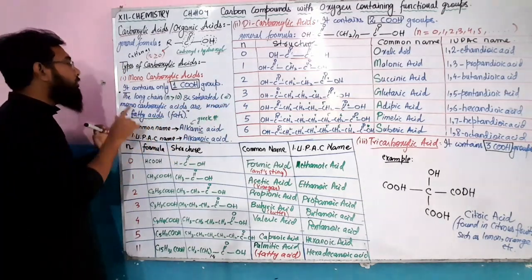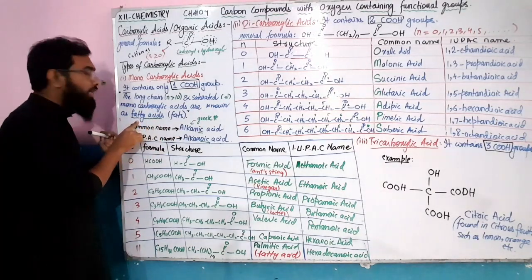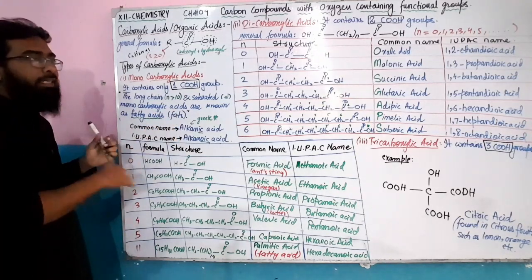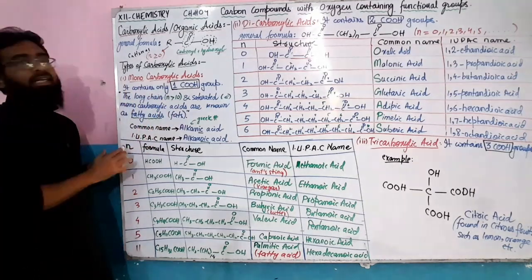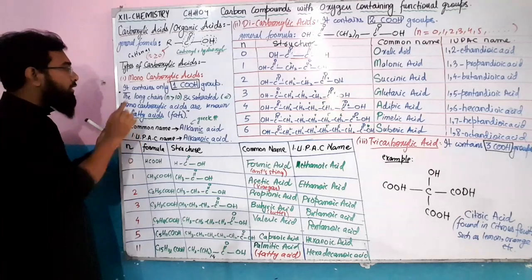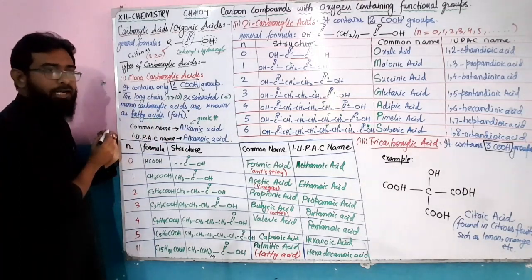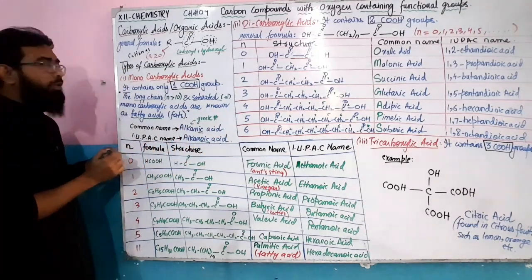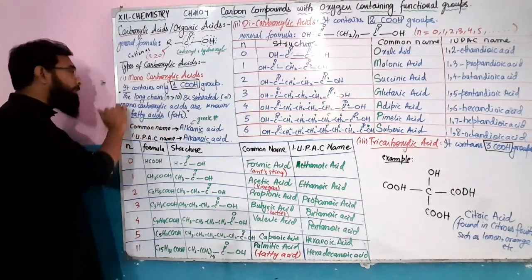Monocarboxylic acids are also called fatty acids. Fatty acids have a long carbon chain of 10 or more carbons. When they are saturated — meaning all single bonds — they are called saturated long-chain monocarboxylic acids, or fatty acids.